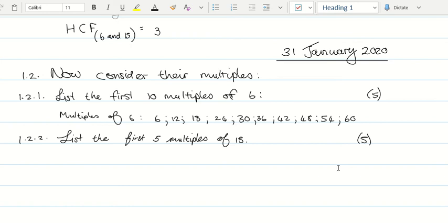Continuing with question number 1.2.2, it asks that we list the first five multiples of 15. If you want to go further than that, there's nothing wrong with that. If you want to list 10, that would be ideal. They only ask us for the first five, so let's see if we can write down the first five multiples of 15.